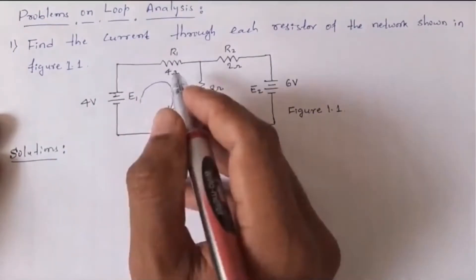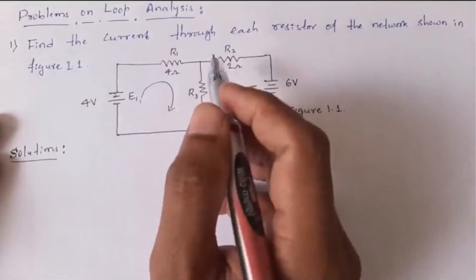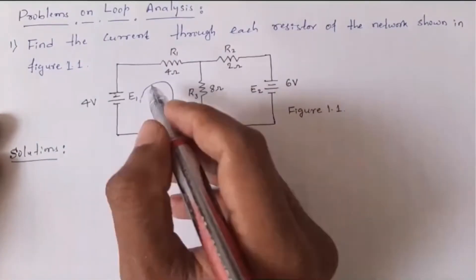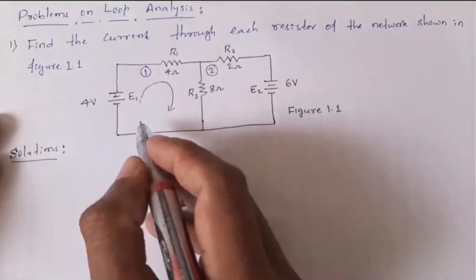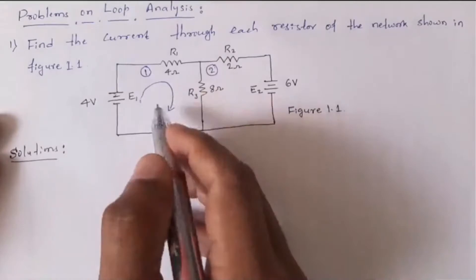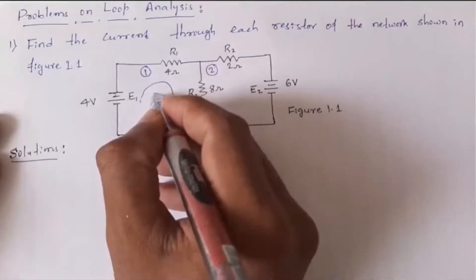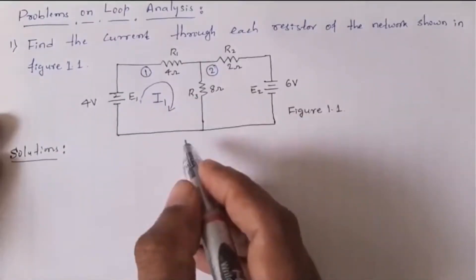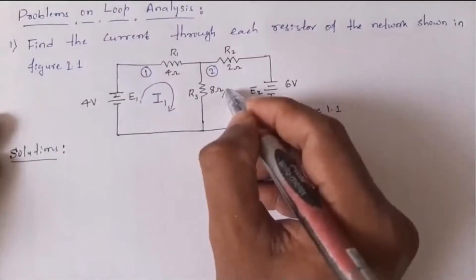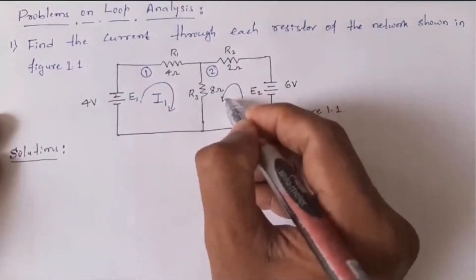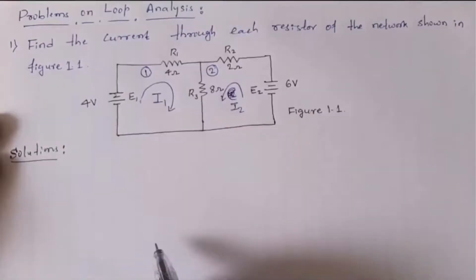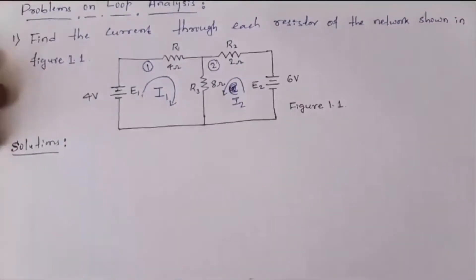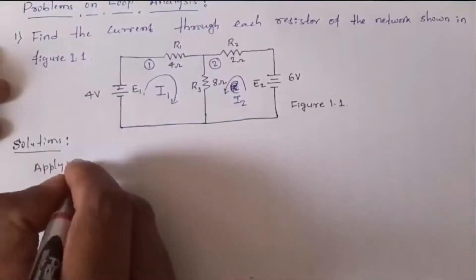I assume some arbitrary conventional current — in mesh one I apply current in clockwise direction, calling it i1, and in mesh two I apply current in anticlockwise direction, calling it i2. You can apply both in clockwise or both in anticlockwise direction. Now I will develop mesh equations by applying KVL to loop one.